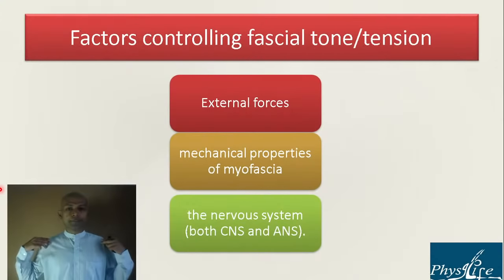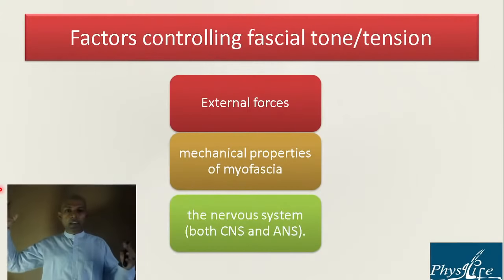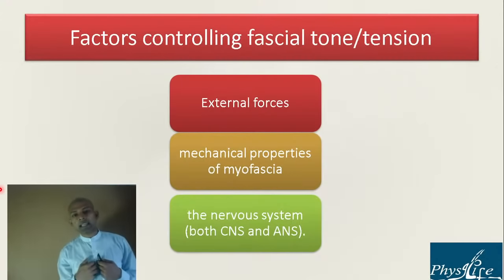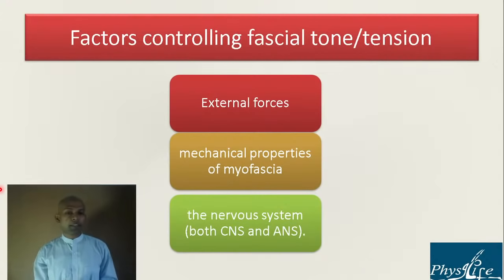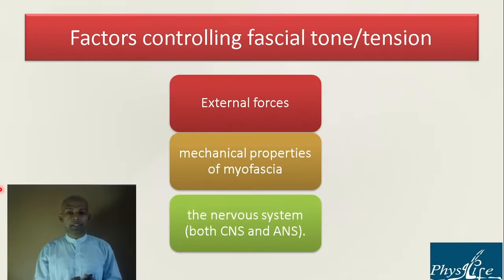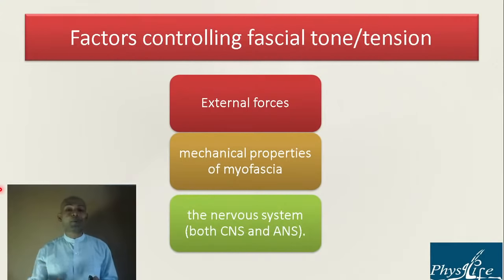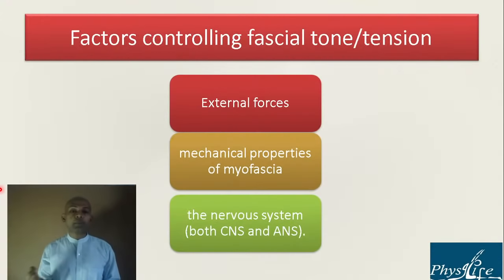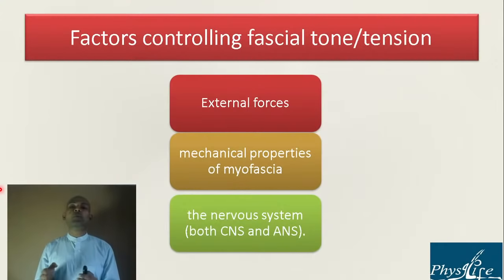One factor is external forces — putting a 20 kg load on my head will change my posture and myofascial tension. Other factors are the mechanical properties of myofascia and the nervous system — both CNS and ANS. Mechanical properties include flexibility, stretchability, viscoelastic properties, amount of muscle protein, and tensile strength. Neural properties include how much efferent and afferent stimulation the myofascia is receiving. All three factors decide the optimum tone and tension of the myofascia.